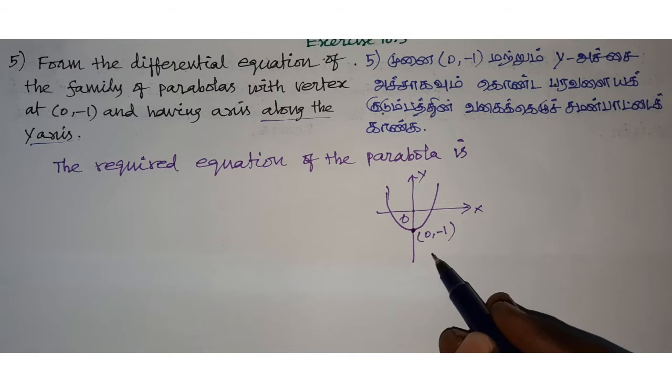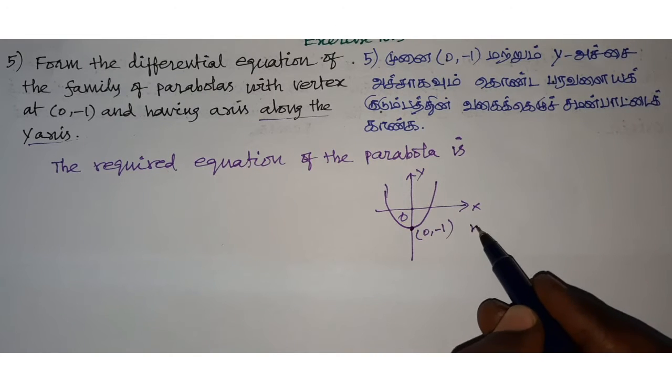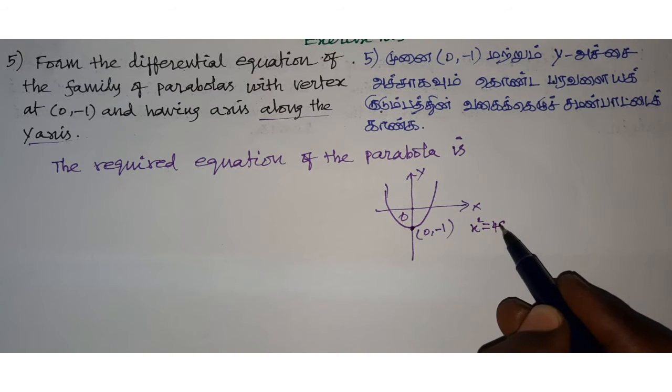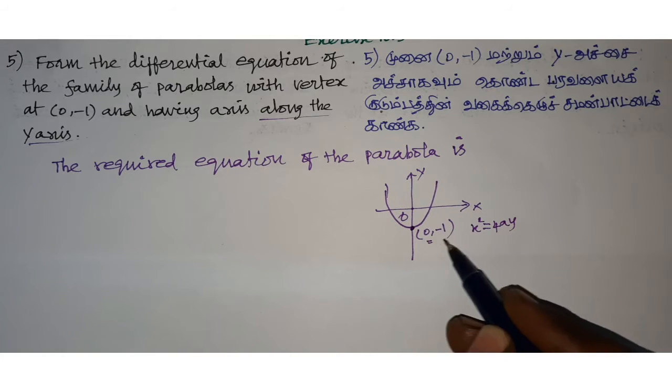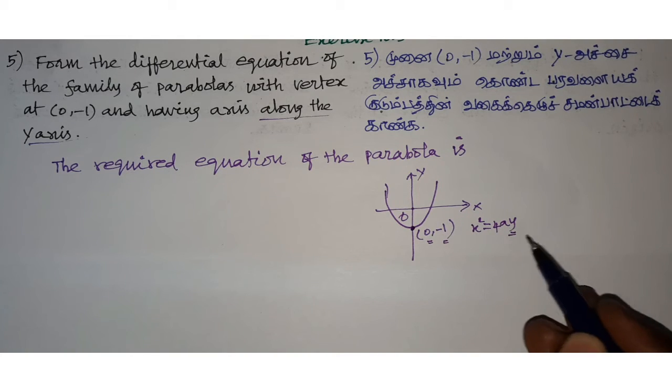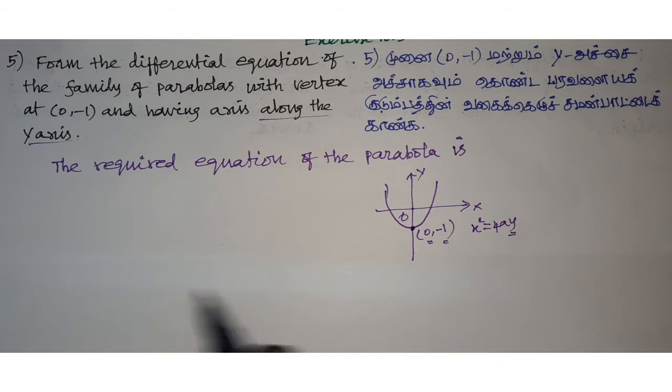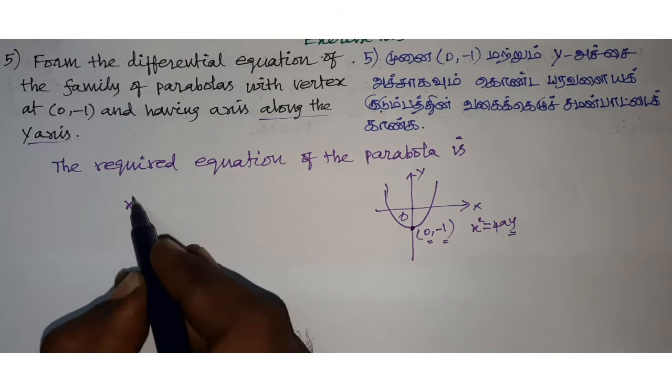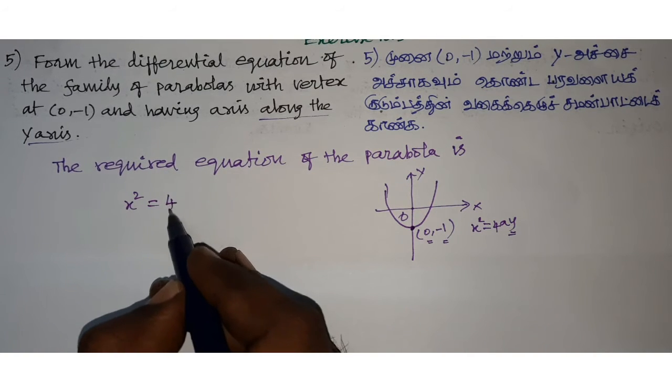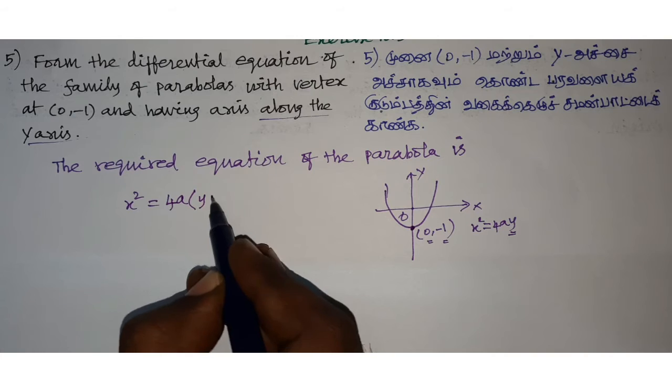x² equal to 4ay. If you want vertex (0,-1), you can see y plus 1. That is, x² equal to 4a(y+1).